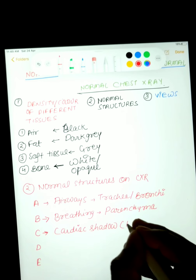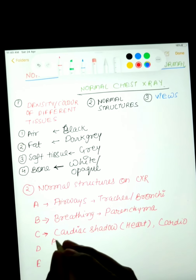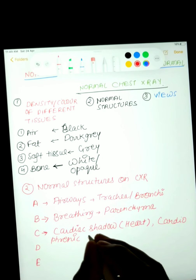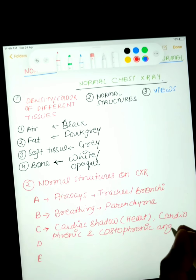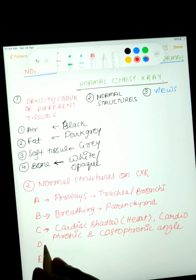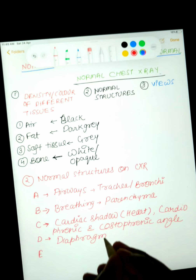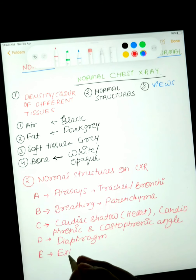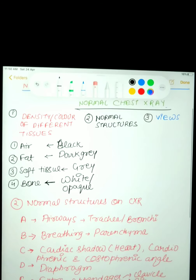C stands for cardiac shadow — the shadow of the heart — as well as the cardiophrenic and costophrenic angles. I will show all things one by one. D stands for diaphragm, and E stands for extra appendages like the clavicle, ribs, and sternum.